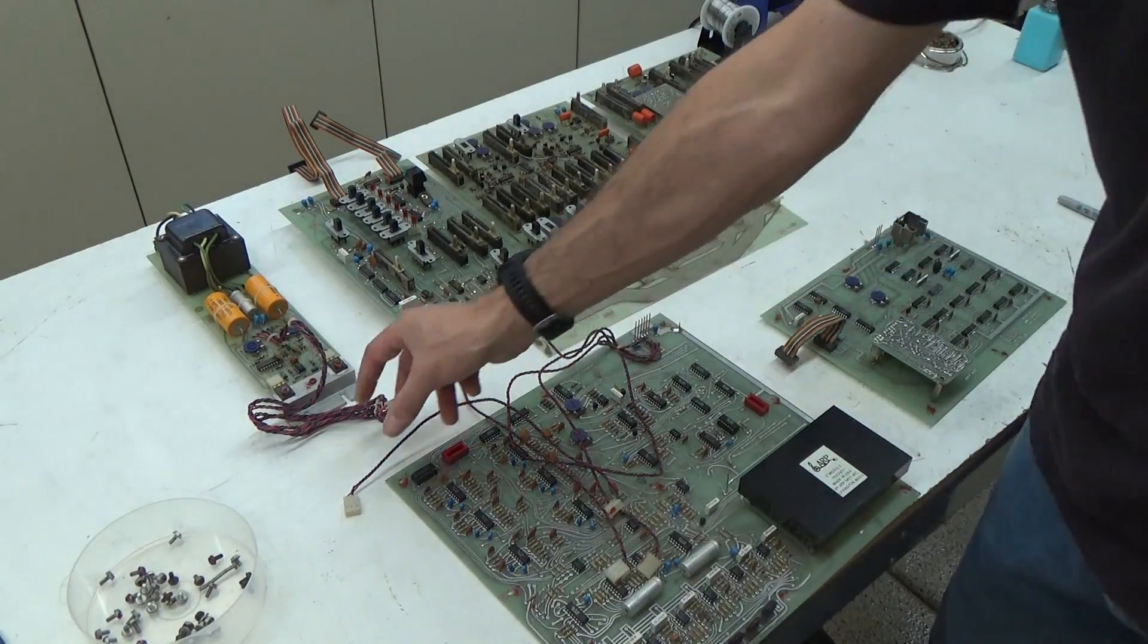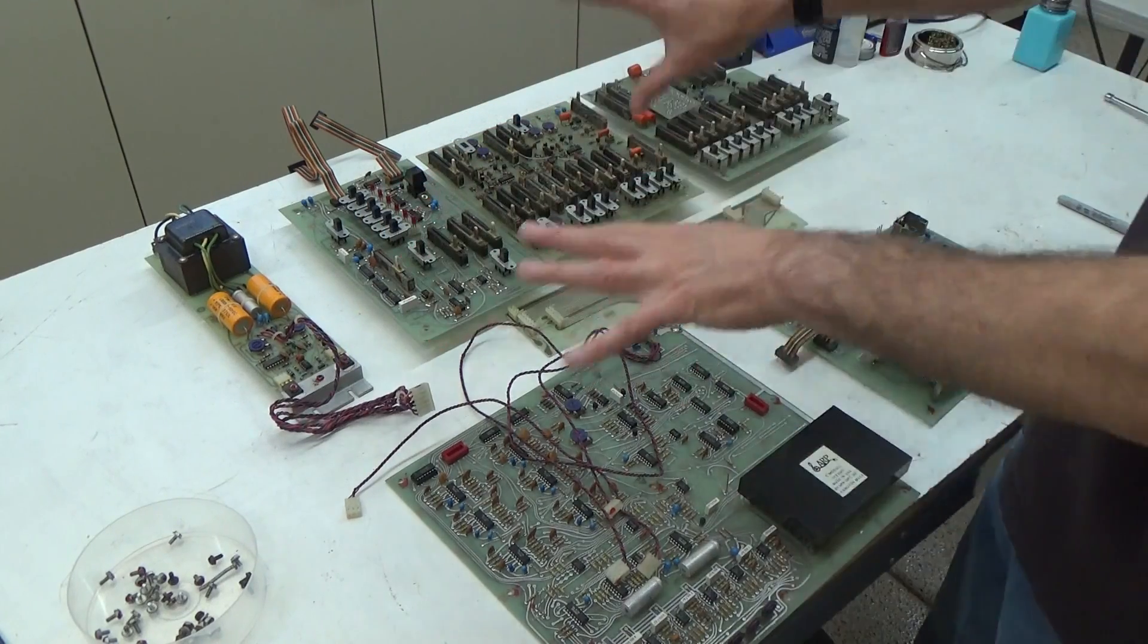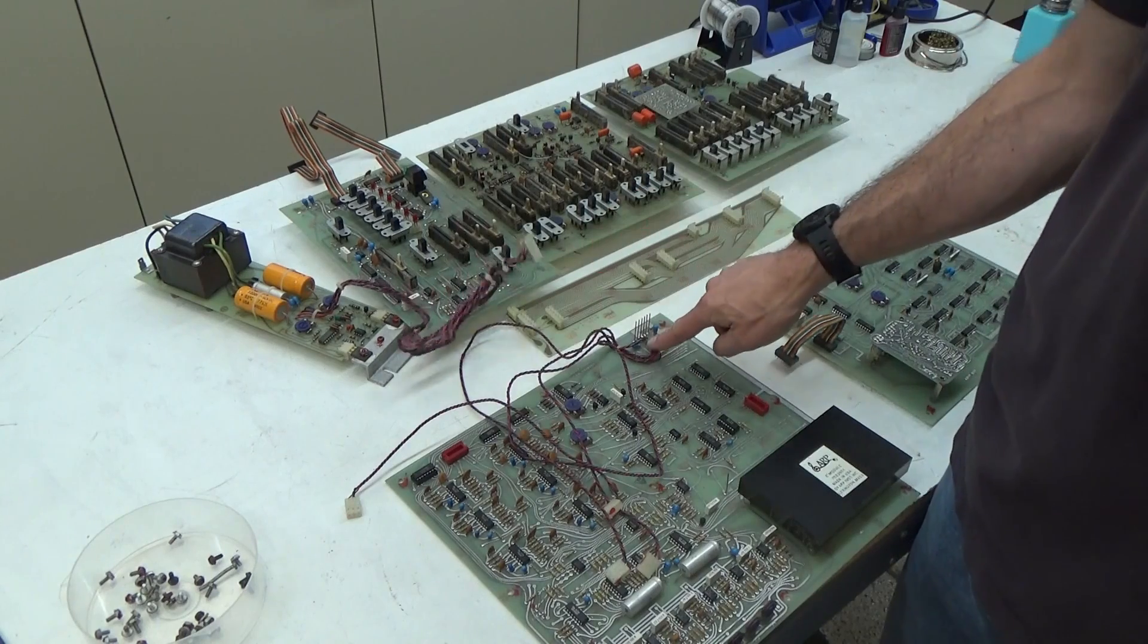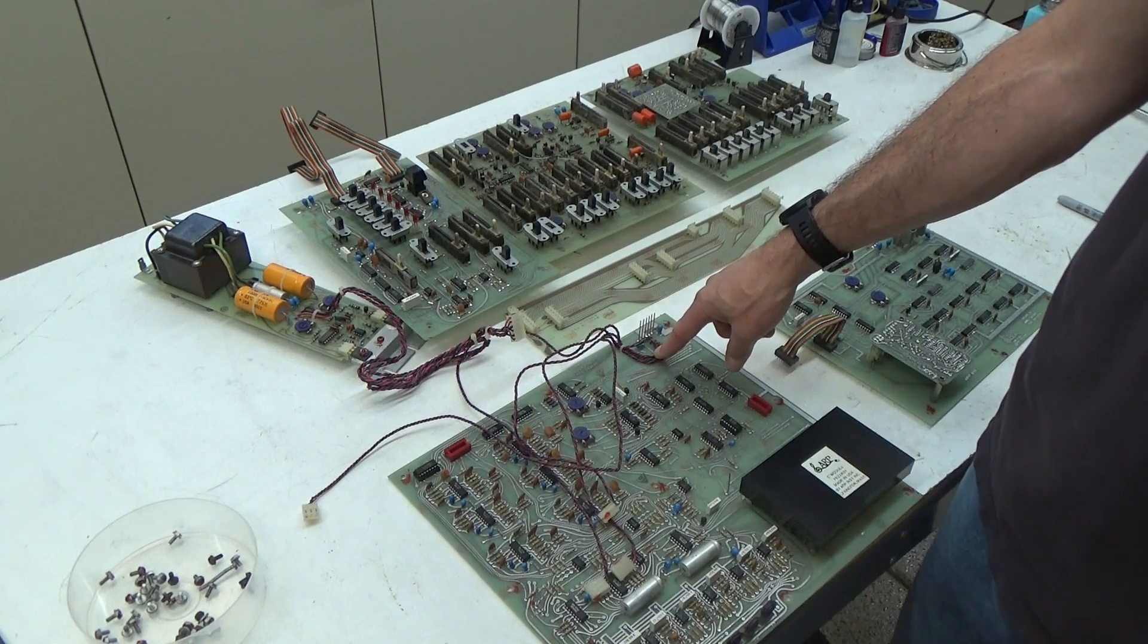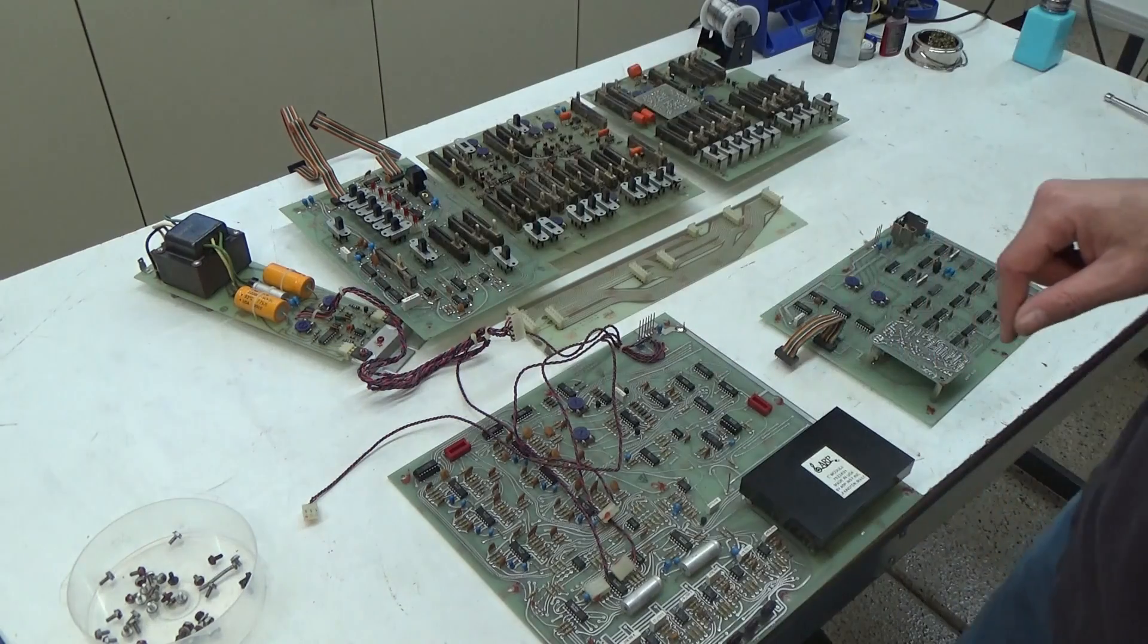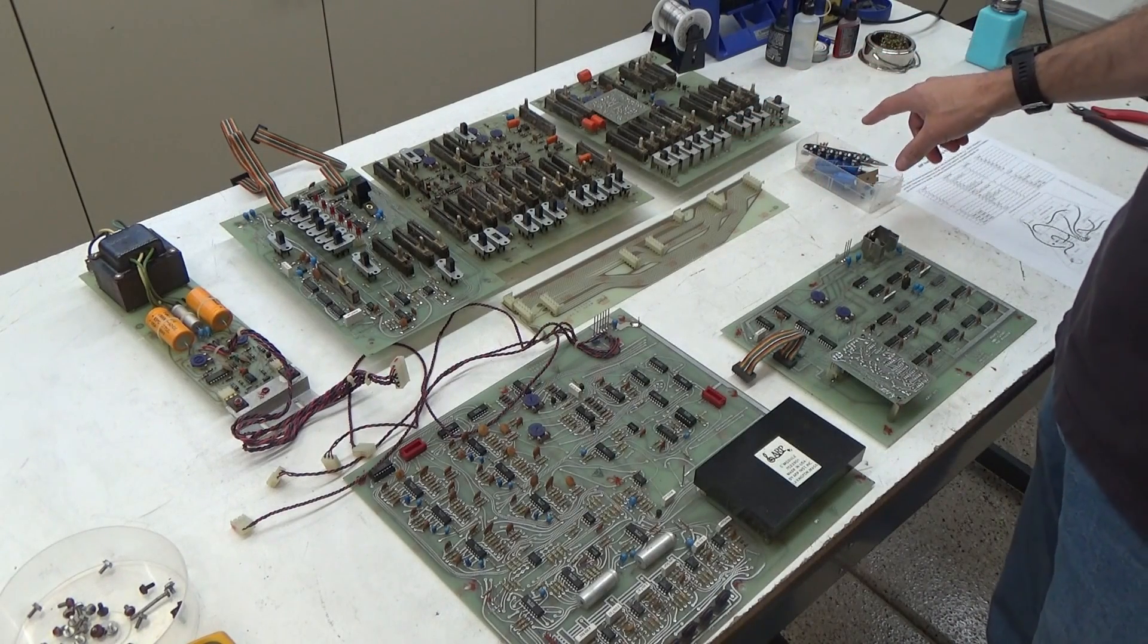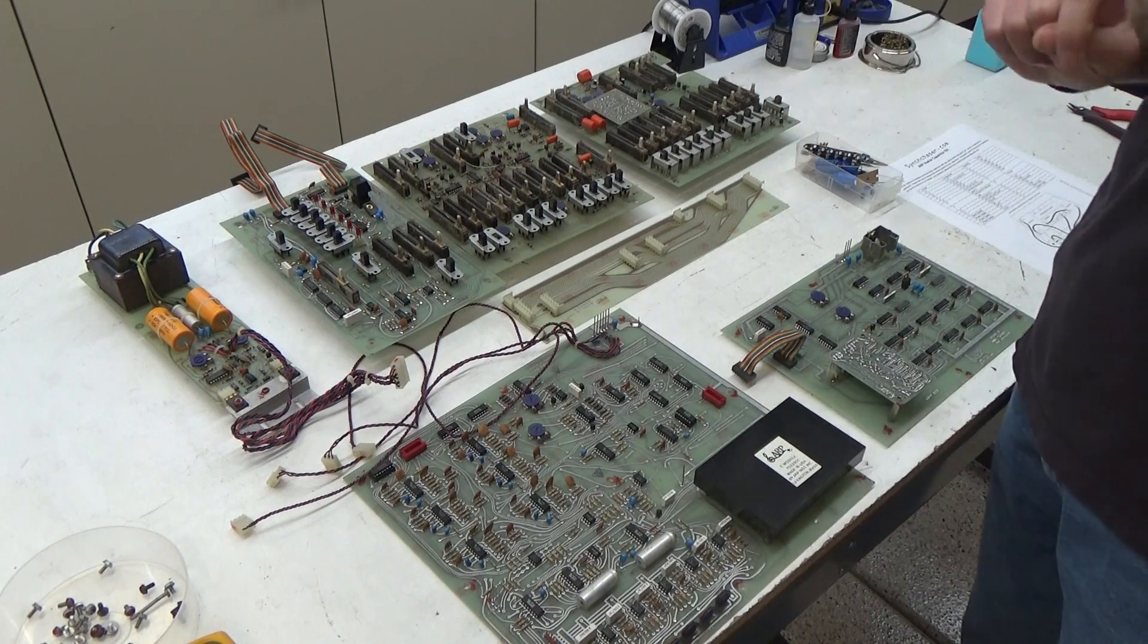And then one other thing that you'll notice is because this is the ARP Omni power supply, it distributes power to one board and in the Omni it branches off to all the other boards. So what this does is it plugs down here onto board E and then these wires going off distribute the power to all the remaining circuit boards rather than having all these wires branching off the power supply. So now that I have all the boards out, I'm going to recap them with the capacitors from the kit that I have on my website synthchaser.com. But before I do that, there's something I want to show you.